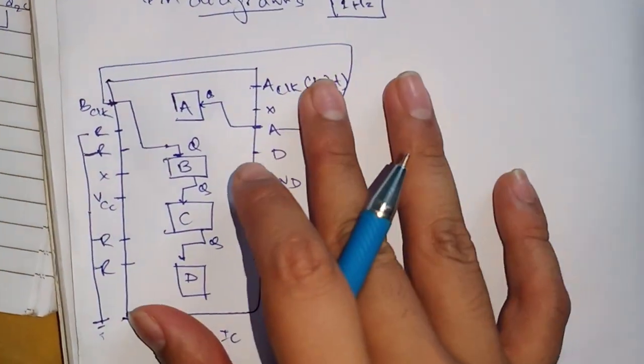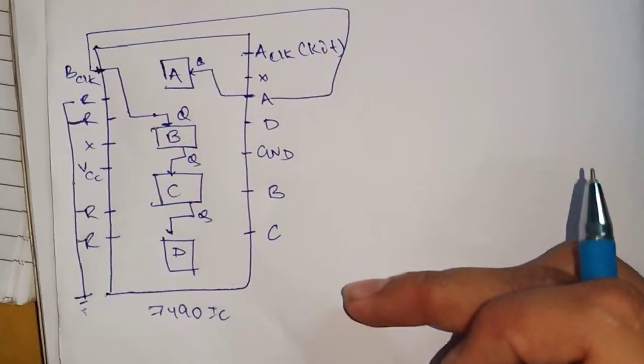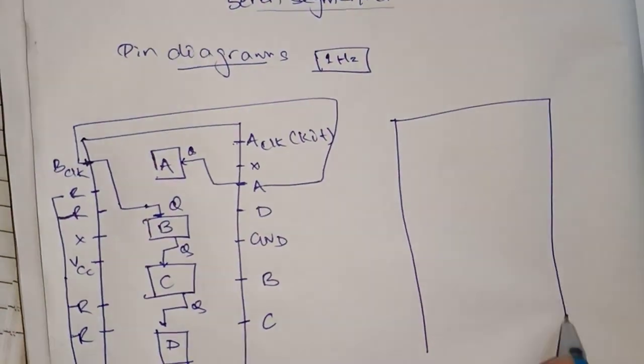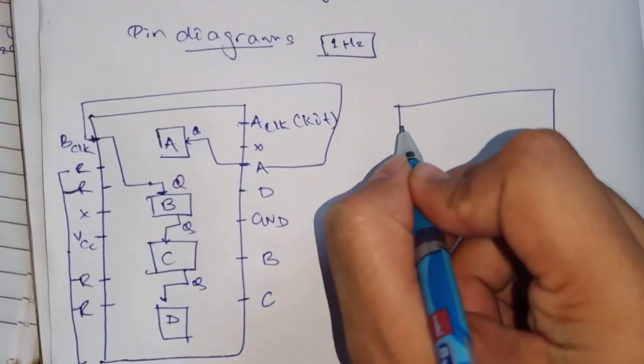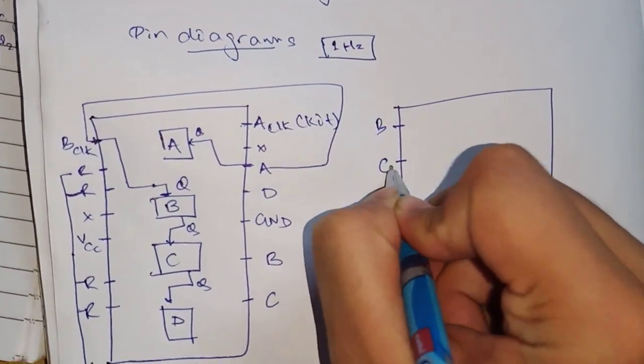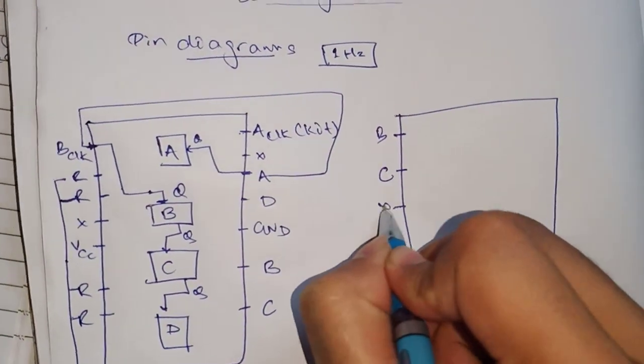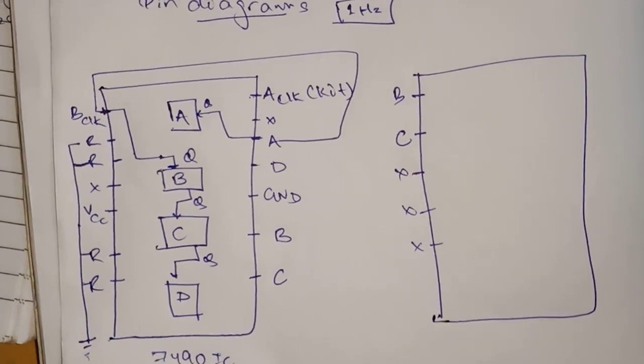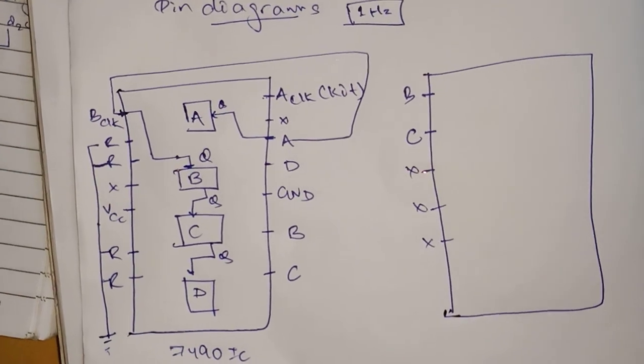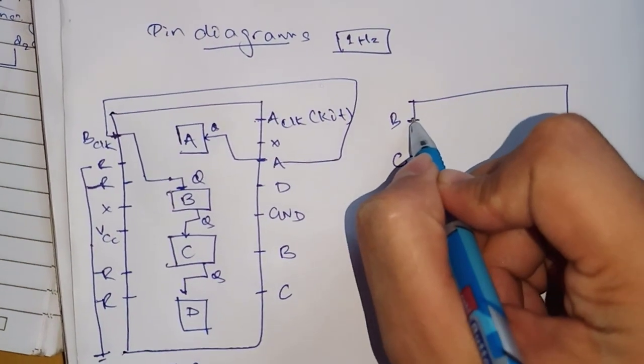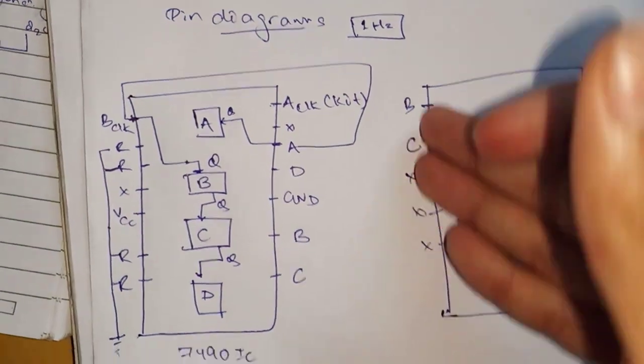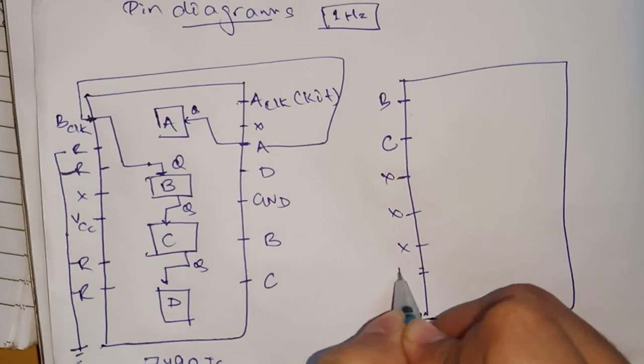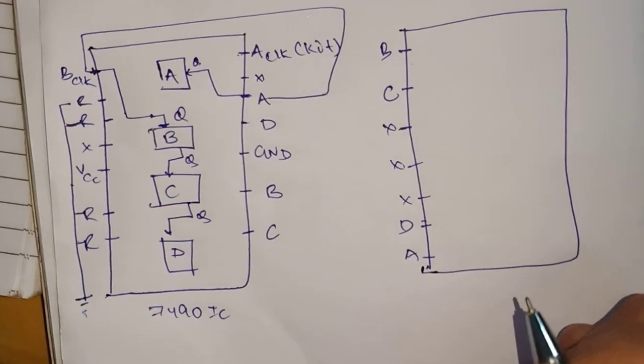After this you need to draw 7447 IC. In 7447 IC your first connection is B, then C, then 3 no connections. I'm telling you the easiest way: B and C, then 3 no connections, then D, then A, and at last one ground.